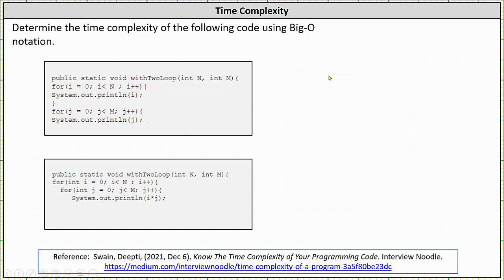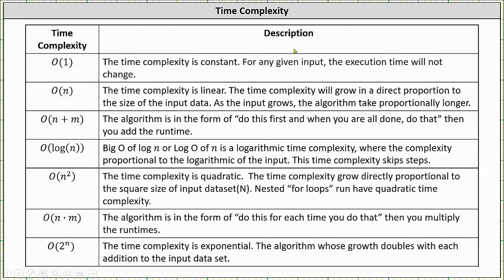In this lesson, we will take a look at three examples of determining the time complexity of code using big O notation. Before we begin, though, I do want to share this table where we have the time complexity on the left and our description on the right. You may find this helpful for reference.